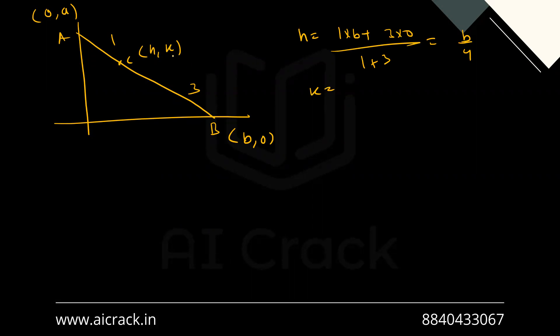The k coordinate would be one into zero plus three into a divided by one plus three. That would be three a by four. So basically we have got the value of b as four h and we have got the value of a as four k by three.